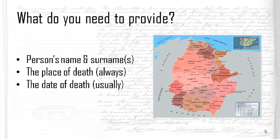The place of death is equally important. You need to know where your ancestor died, because each municipality has its own registry office. You need to know specifically where that person's death would have been recorded.